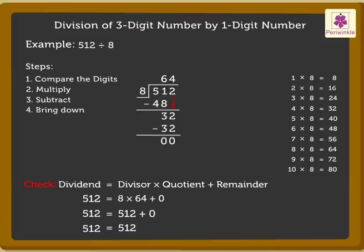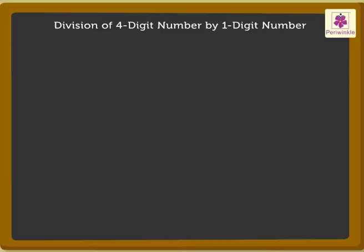How about solving one more example? But this time, we will take a four-digit number. It would be interesting. What is 6,326 divided by 2? Children, here also, we will use the same process explained in the previous example.